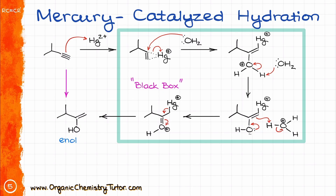You can skip that part and get to the enol product right away. When it comes to the keto-enol tautomerization step, that one is definitely fair game — we already know the mechanism for it, so you need to be able to do that one for sure. For extra practice, draw the mechanism for the transformation shown on screen and see if you can get the same final product. You should have two steps: starting with the protonation of the double bond, followed by deprotonation of the intermediate yielding a ketone.